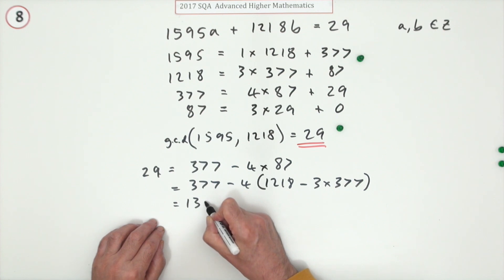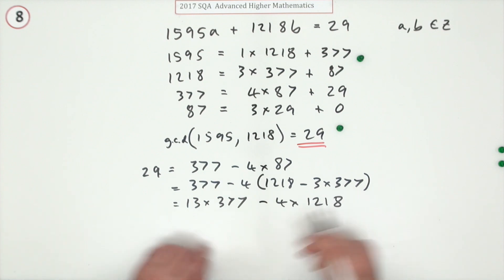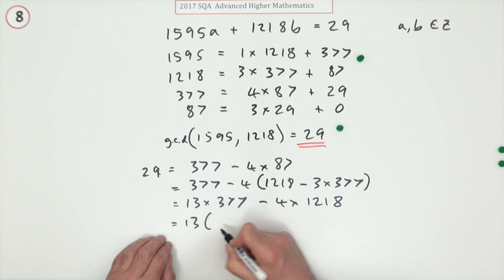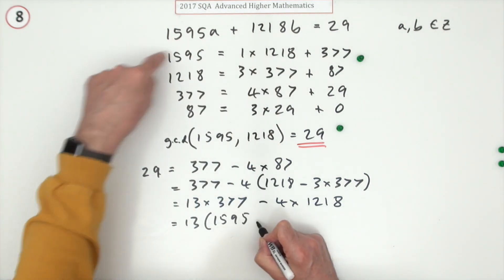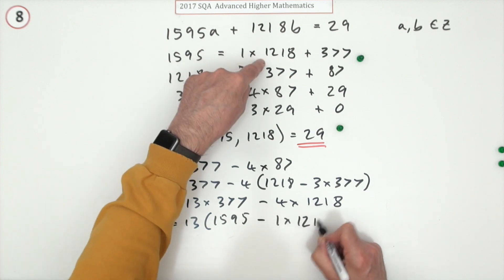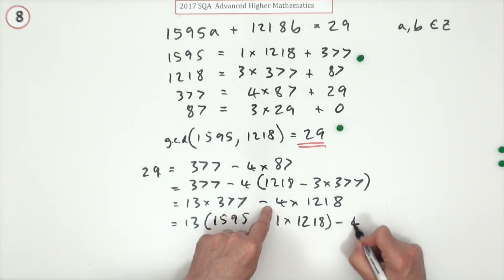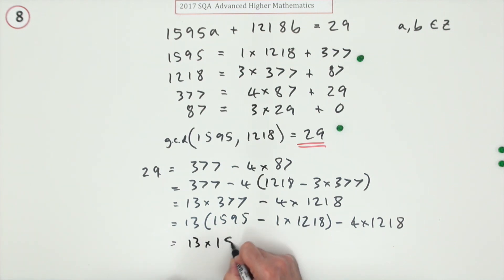Now we step back up to the 377 and you're almost there. 13 lots of - now what was 377? It was 1595 minus just one lot of 1218. So all together you've got 13 lots of 1595 minus 13 minus another 4, minus 17 lots of 1218.